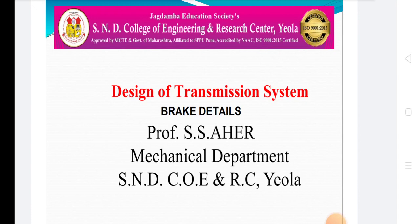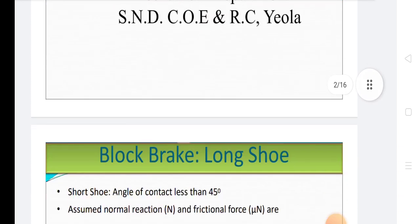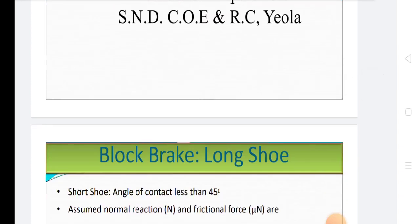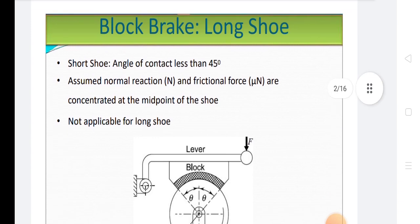In block brake there are also three types: single block brake, double block brake, and pivoted block brake. In band brake there are two types: simple band brake and differential band brake. In disc brake there are five types like mechanical brake, hydraulic brake, pneumatic brake, electrical brake, and automobile brake.